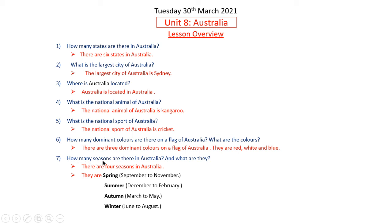Question 7: How many seasons are there in Australia, and what are they? There are 4 seasons in Australia. They are: Spring (September to November), Summer (December to February), Autumn (March to May), and Winter (June to August).